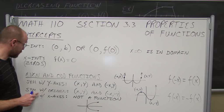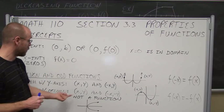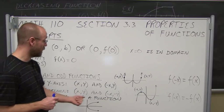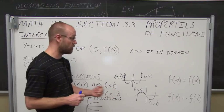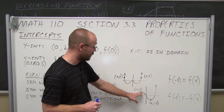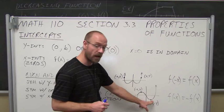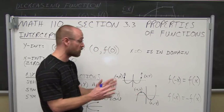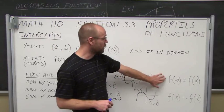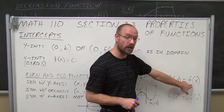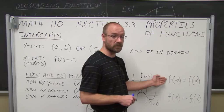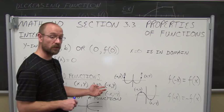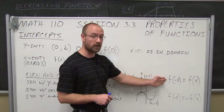We could also have symmetry with the origin, as discussed in section 2.2. When we put in a value x, we get out a value y. When we put in a negative x, we get out a negative value y — the signs change for both x and y. So when we put in a negative x and get out the same function we started with, that tells us it's symmetric with the y-axis, which also tells us it's an even function.